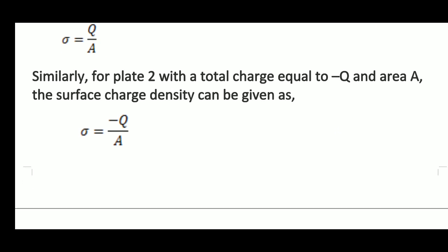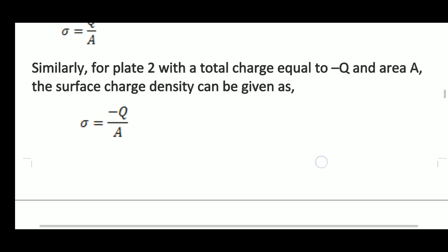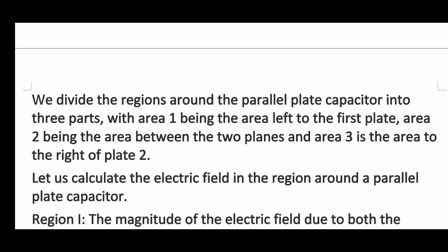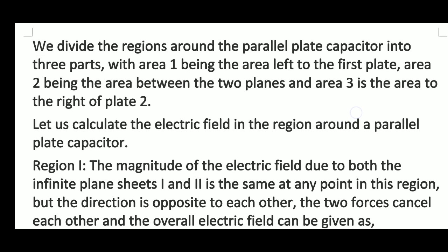For plate two, the charge is minus Q and the area is A, so the surface charge density is sigma equals minus Q by A. We divide the region around the parallel plate capacitor into three parts: region one is the area to the left of the first plate, region two is the area between the two plates, and region three is the area to the right of plate two.